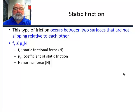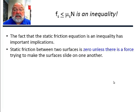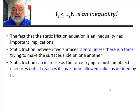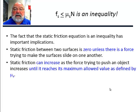The inequality is important. Static friction between two surfaces is zero unless there is some force that's trying to make the surfaces slide or slip against each other. Static friction will increase to match the force that's trying to make them slip until it reaches a maximum force — the maximum static friction force — that depends upon the surfaces and is defined by the coefficient of static friction.